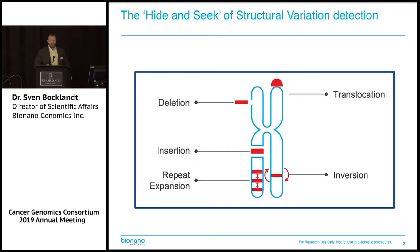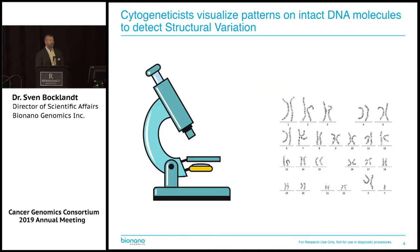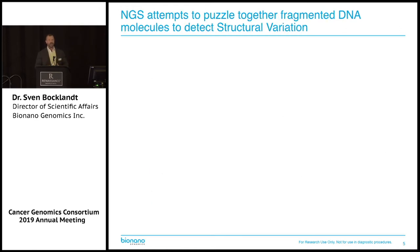I want to talk about structural variation, because that is what we detect. And if you're studying cancer genomes, you want to know the structure of these genomes — these complex rearrangements in sometimes heterogeneous samples. For about 50 years or so now, that's been done with cytogenetics, where you use some form of microscopy to look at patterns on intact DNA molecules to detect structural variation directly.